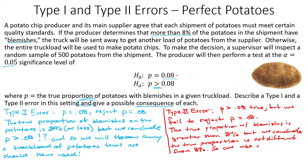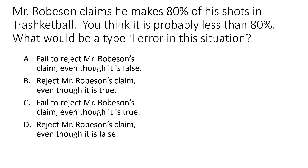So we use a bad truckload of potatoes. We're using potatoes that we shouldn't use, and we're going to get some bad potato chips out of this. This one, we could probably end up getting sued — we're using bad potatoes and making bad potato chips. For the Type 1 error, we're throwing away stuff we probably could have used, but no one's going to get hurt. For the Type 2 error, someone could end up getting hurt.